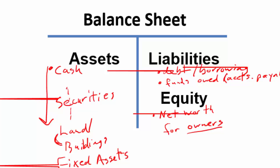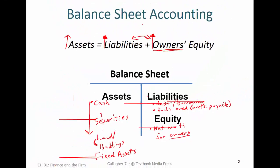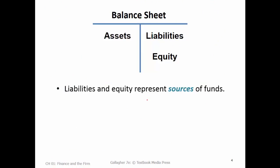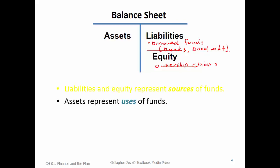So to summarize: liabilities and equity represent the sources of funds — borrowing from banks or the bond market, or ownership claims from actual owners of the business. Assets represent uses of funds. We list these in declining liquidity, so we could have money sitting in the bank, but that hardly earns us anything. We'll talk about the yield curve later — short-term interest rates are usually low and never make as much as running the business itself.